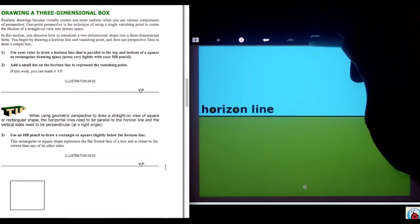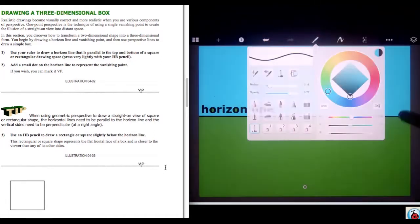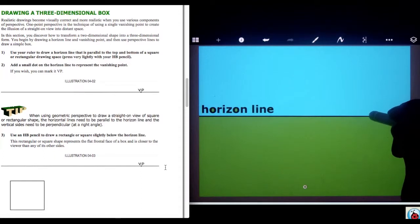Now the first thing we need to do on our horizon line is we need to draw a vanishing point. The point where all of our lines are going to converge. So let me draw one point here on my horizon line.